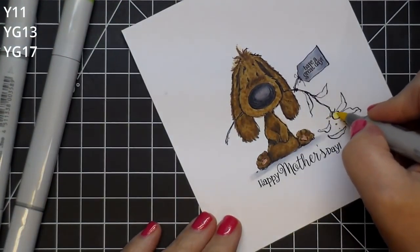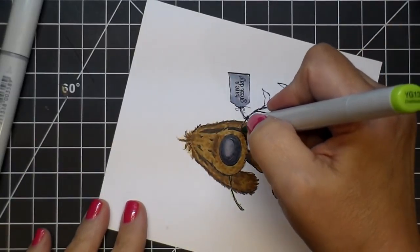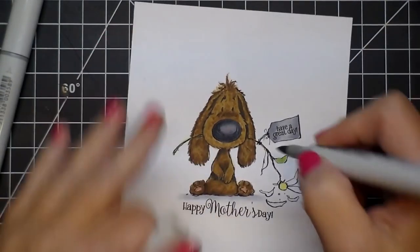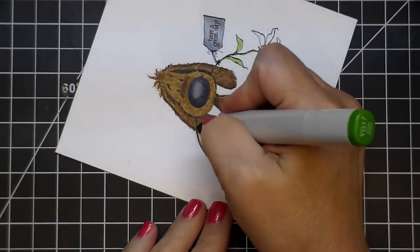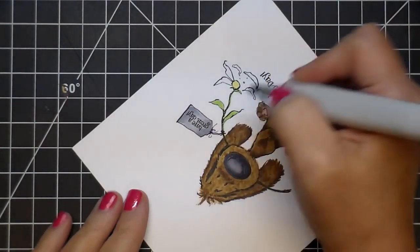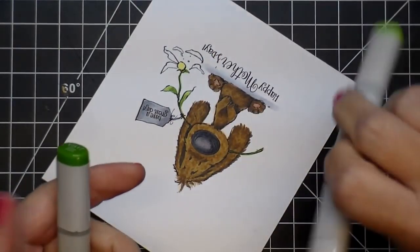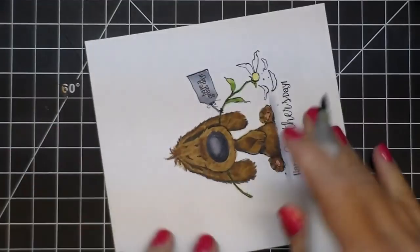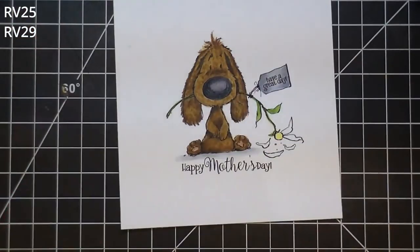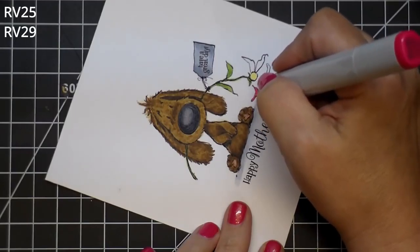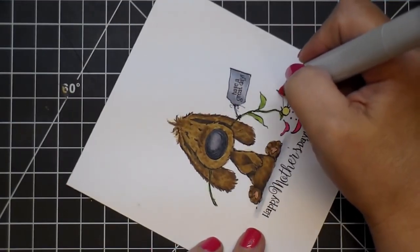Here I'm using Y11, YG13, and YG17. The Y11 is just for the center of the flower, and then the two greens are going to be for the stem and the leaves, giving them just a little bit of some contrast. I'm going to add a little bit darker right at the base of the stem and the leaves. So like I had mentioned, I colored a larger image of this and then decided I wanted to make it into a slider card, so I sized down my image quite a bit. I'm using RV25 and RV29 for the petals. I'm going to give it a base coat with the RV25 and then just add a little bit of shadow with RV29.